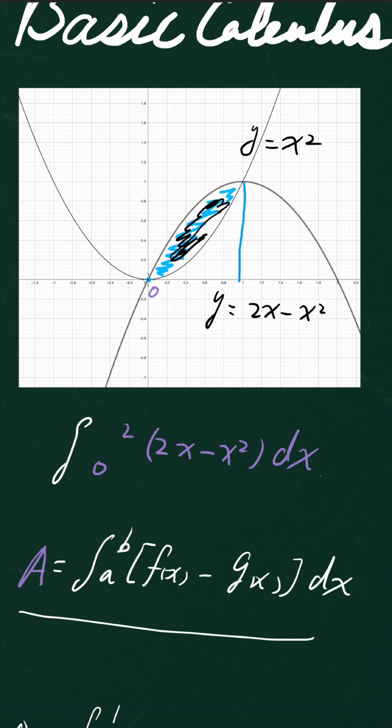It's pretty easy for us to find out the two ending points are 0 and 1. Why? Because you can let x squared equal to 2x minus x squared, and then you can find the two solutions are 0 and 1.